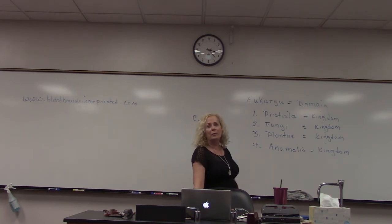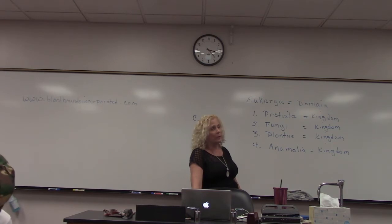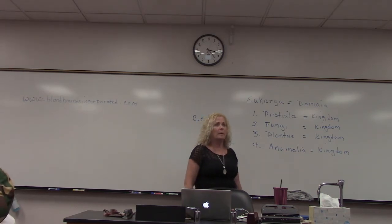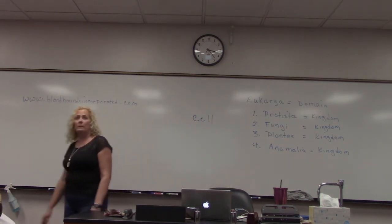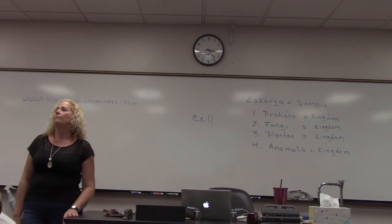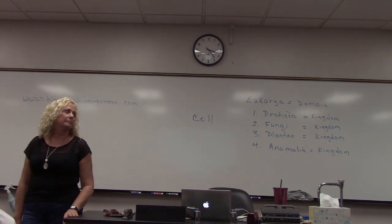After kingdom, we break classifications down further into phylum, class, order, family, genus, and species. You need to memorize this hierarchy. A helpful mnemonic: 'Dumb King Philip came over for good spaghetti' — Domain, Kingdom, Phylum, Class, Order, Family, Genus, Species.